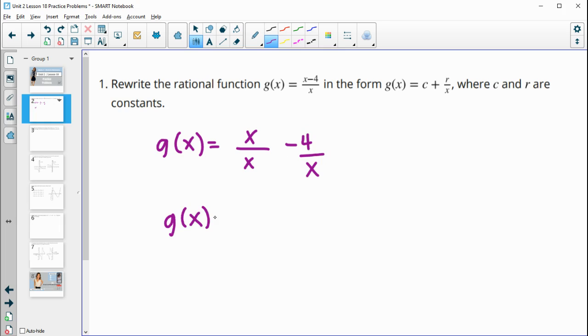So then x divided by x is 1. And now they want us to have a plus, so I'm going to throw this negative up with the 4. So I'm going to put a plus, and then I'm going to put negative 4 over x, since they wanted us to have a plus in here. I don't think it really matters. You could just leave it as minus 4 over x. But we can change it to plus a negative 4 over x also. So then our c value here is 1 and our r is negative 4.